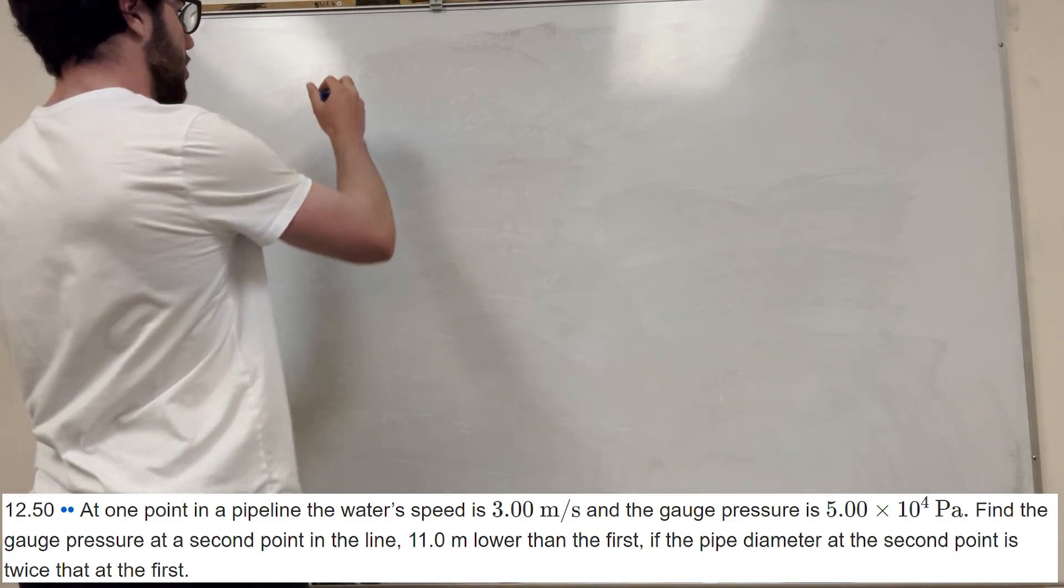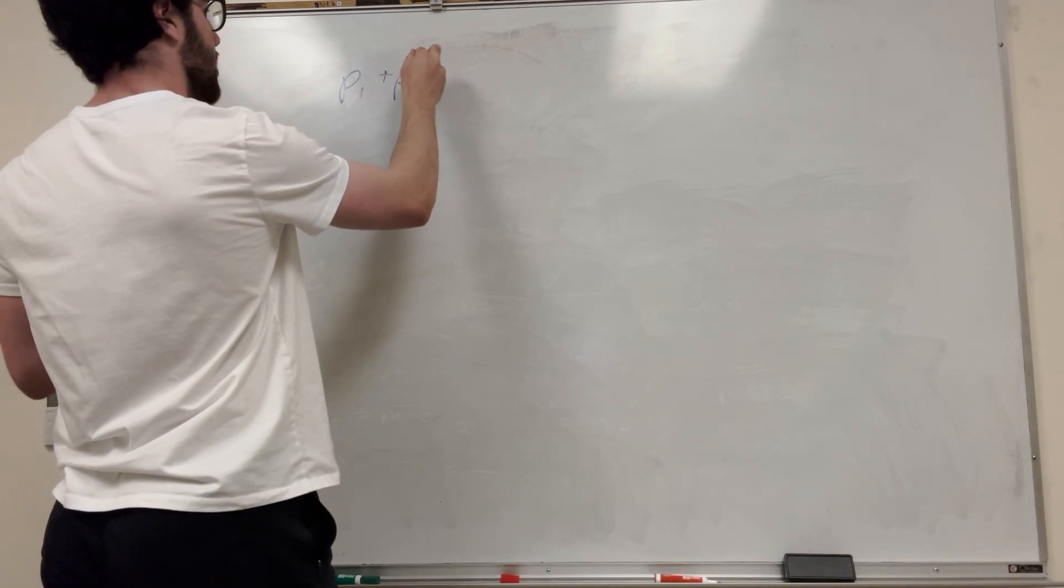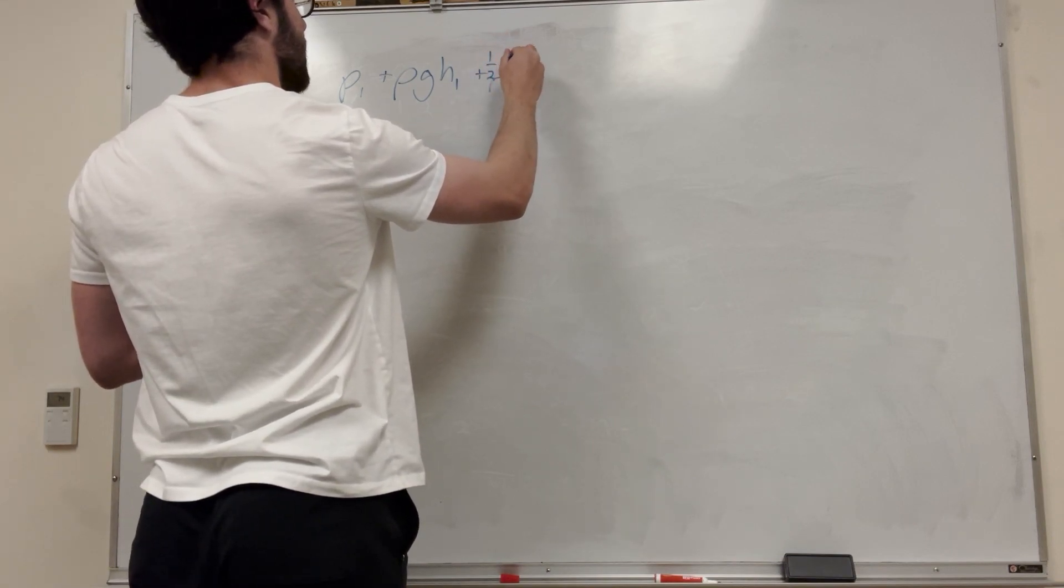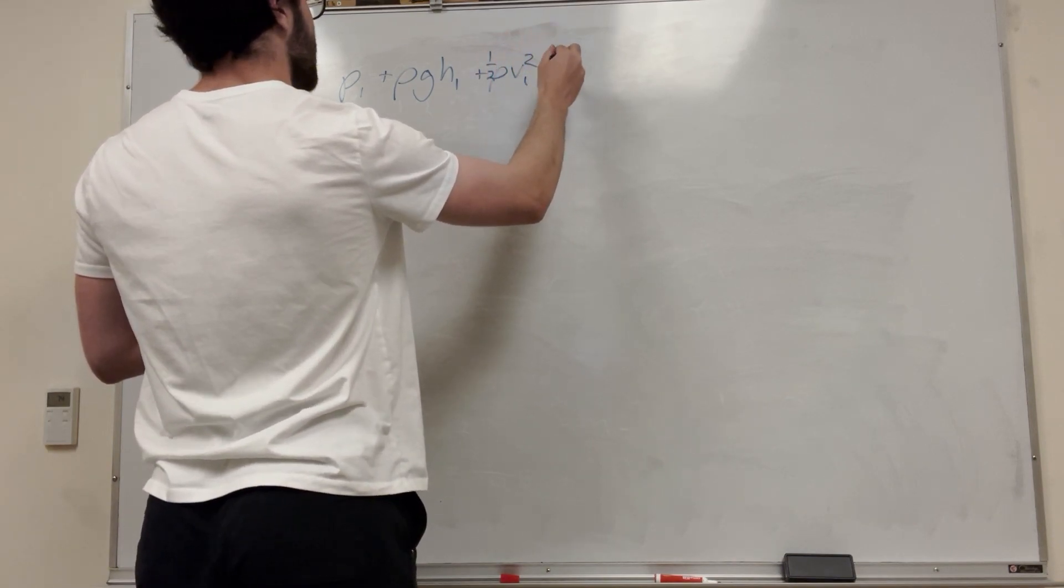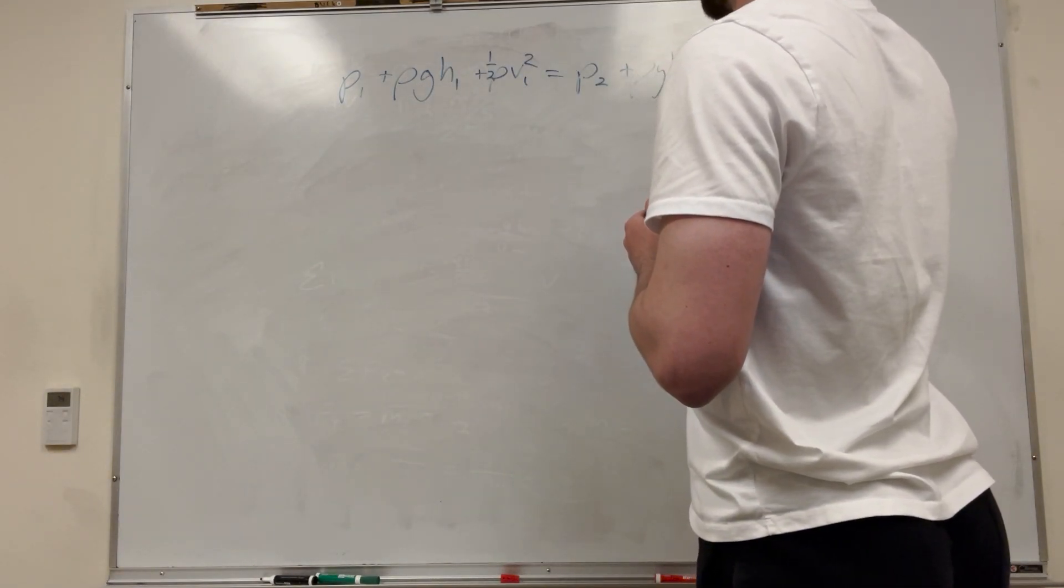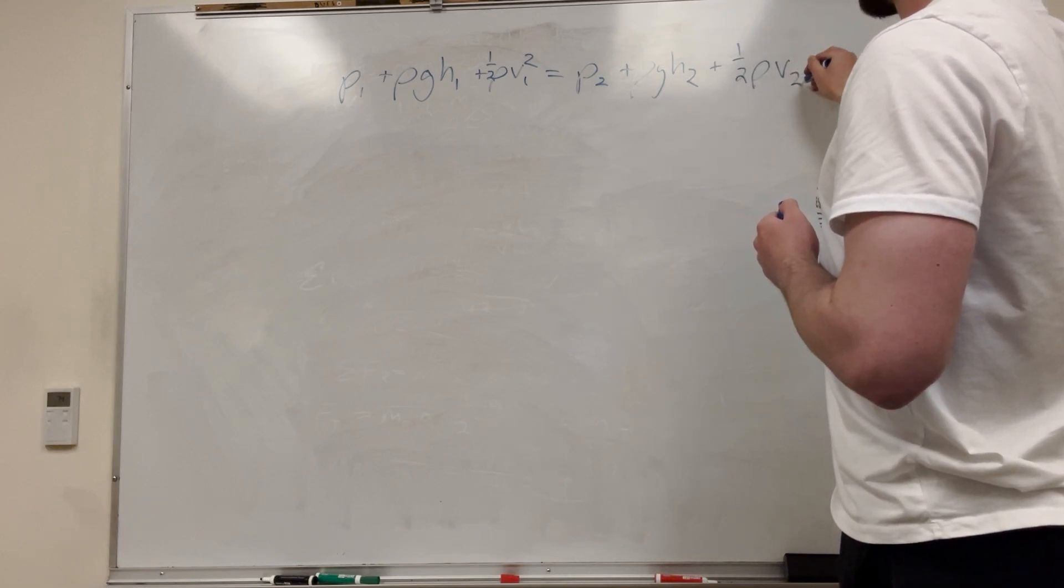Let's just write up Bernoulli's equation to start with. The pressure of 1 plus density, gravity, height of 1 plus one half times the density times the velocity of 1 squared is equal to the pressure of 2 plus the density, gravity, height of 2 plus one half times the density, velocity of 2 squared.